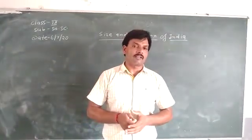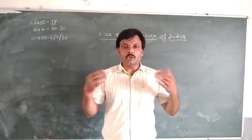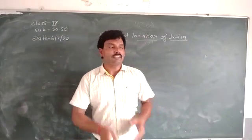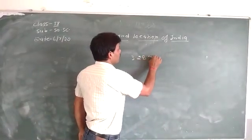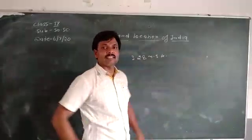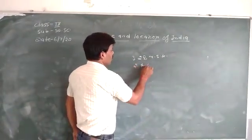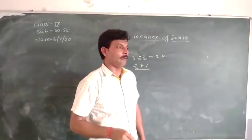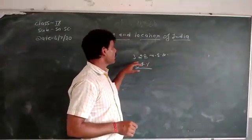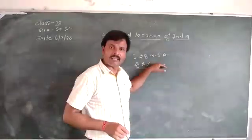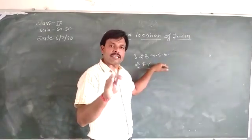The total geographical area of our country is 3.28 million square kilometers and this is 2.4 percent of the world's total area. On the basis of geographical area, our country has the seventh position in the world.